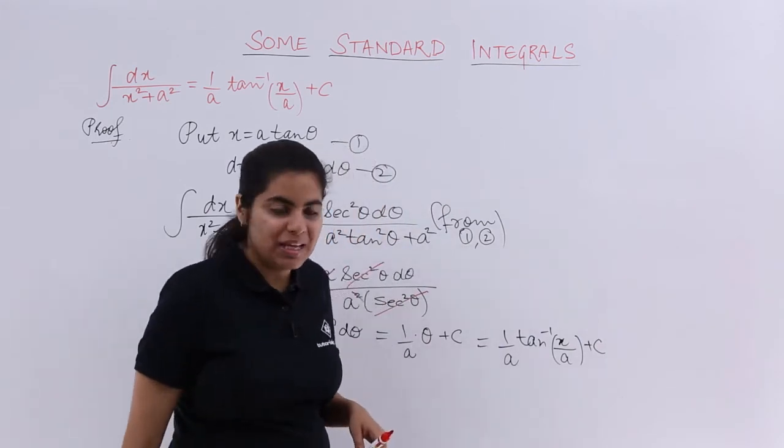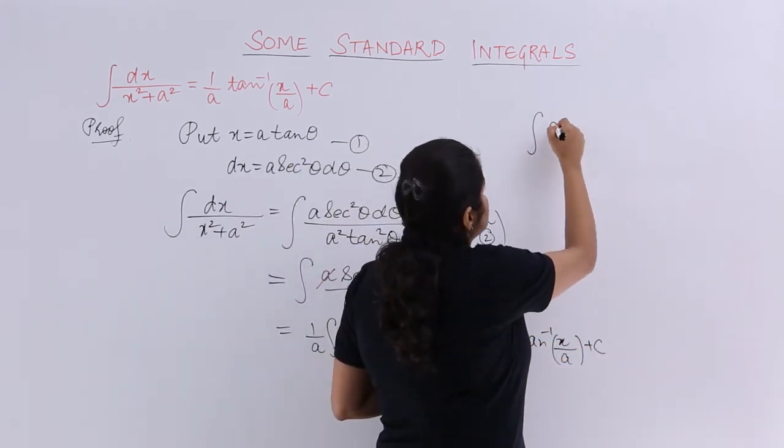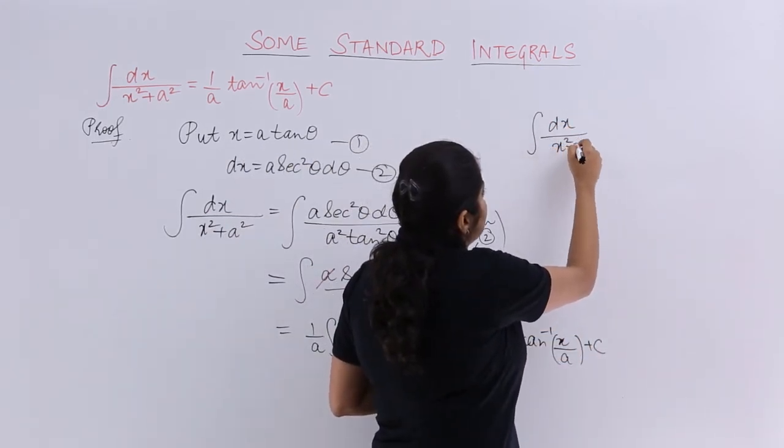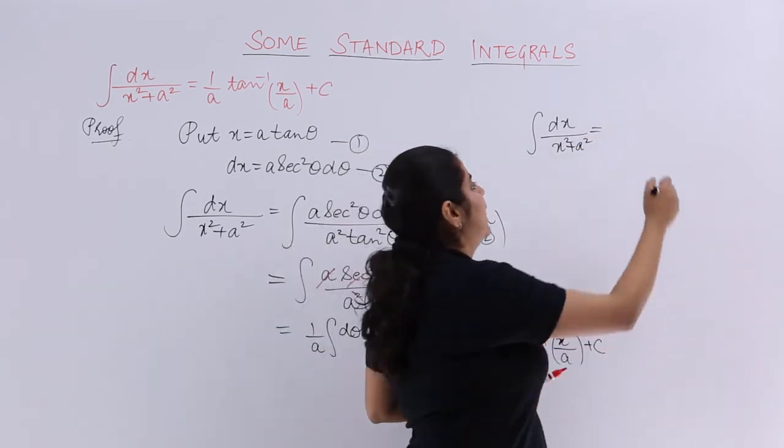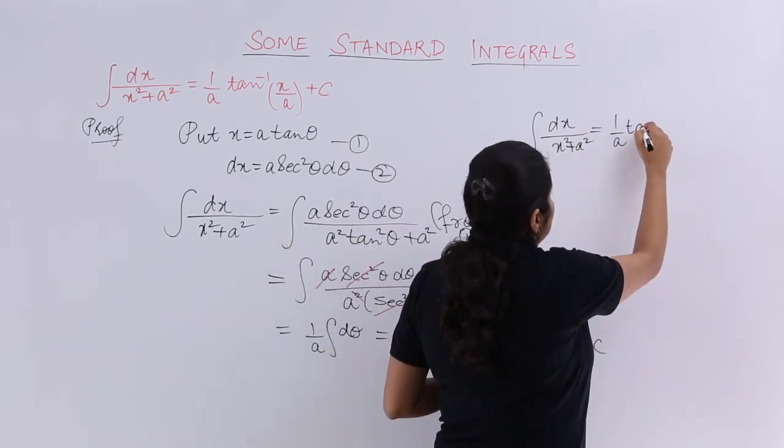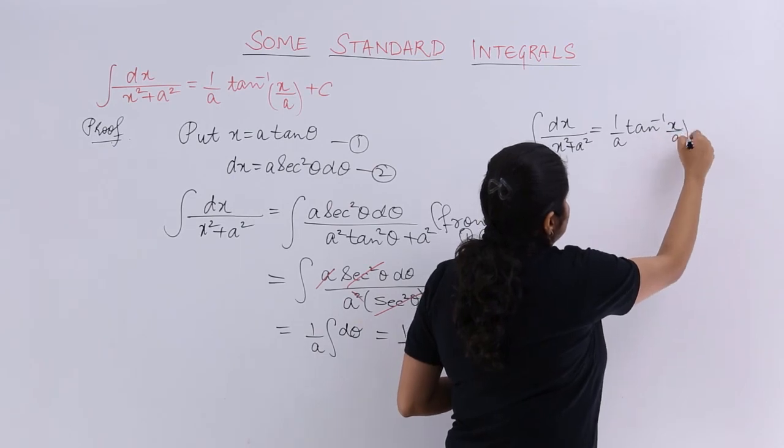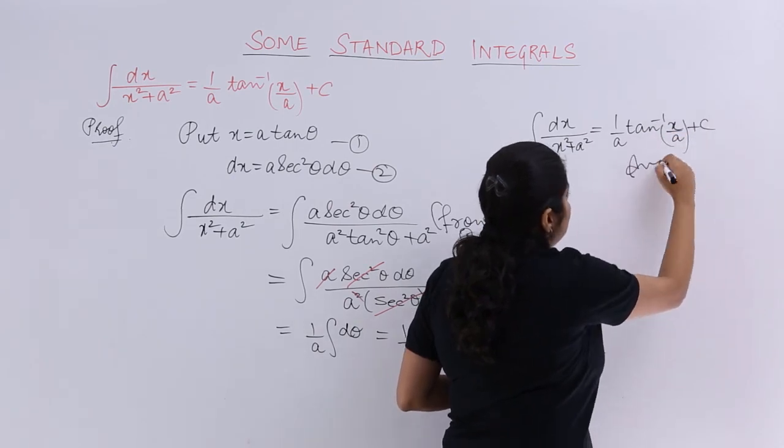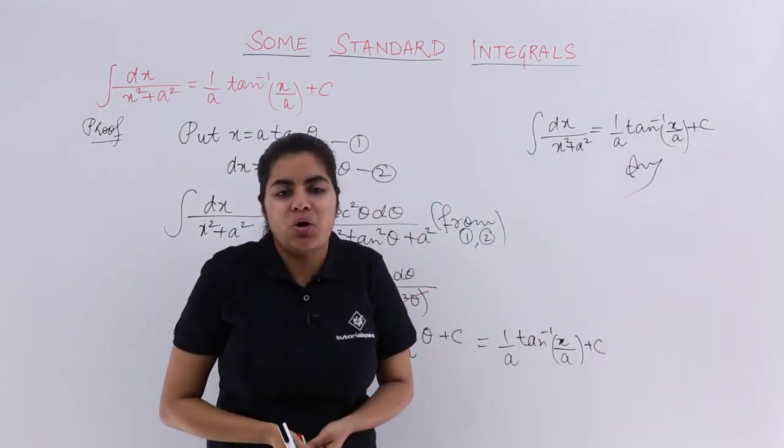Plus c remains as it is. So what is the answer? dx upon x square plus a square is nothing but 1 upon a tan inverse x by a plus c, which is the constant of integration.